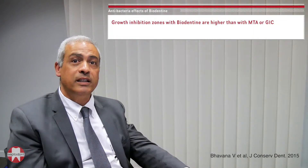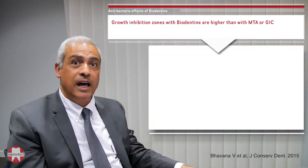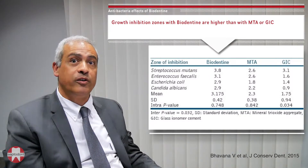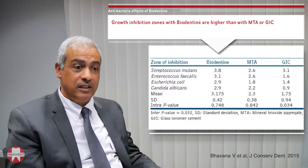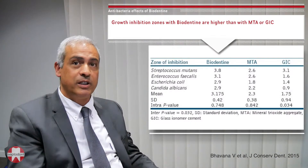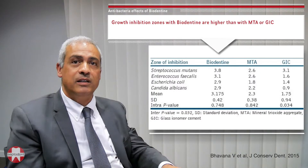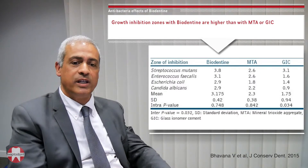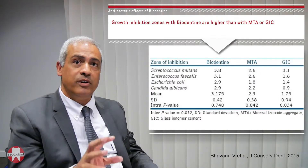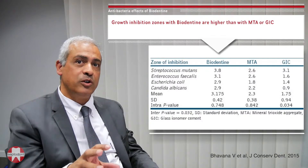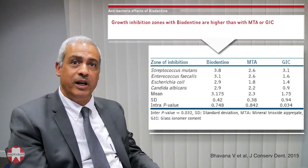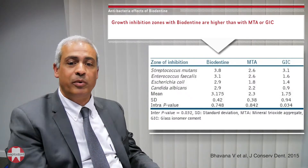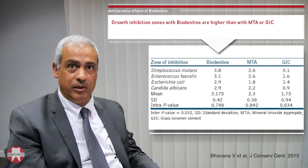Biodentine has been evaluated on different bacterial species and has been shown to have a bacterial growth inhibitory effect. As you can see on this slide, the highest growth inhibition zone was obtained with biodentine compared to MTA or glass ionomer cement.